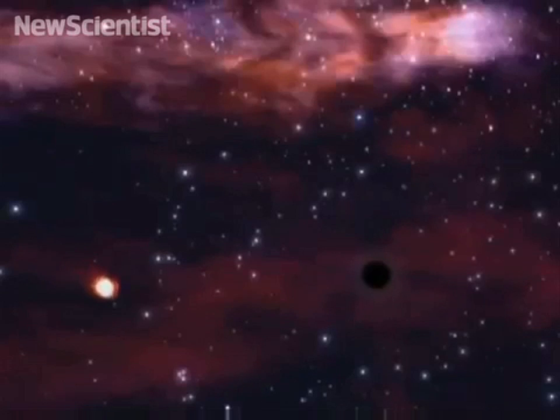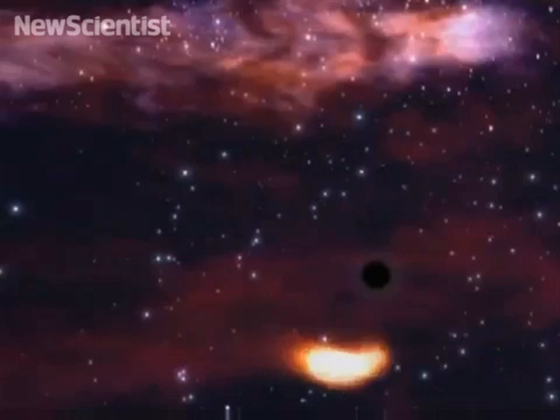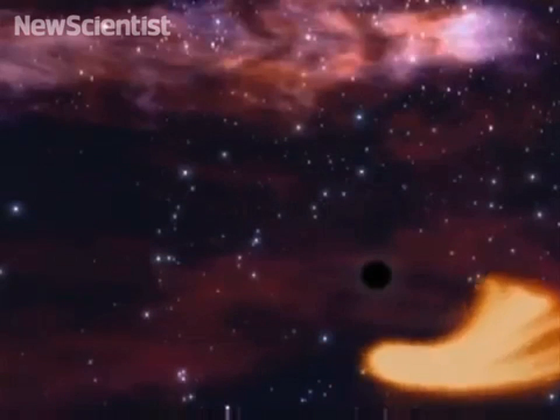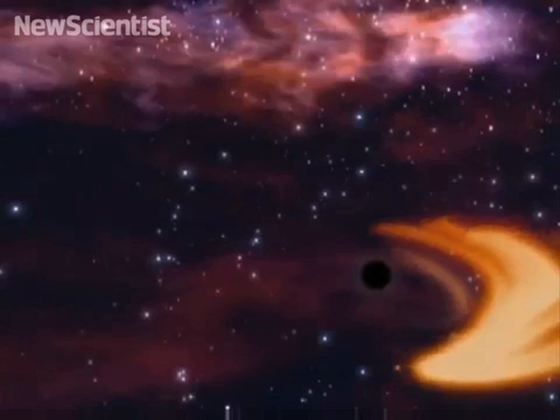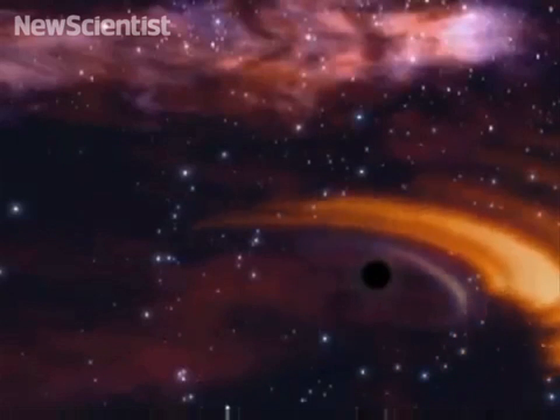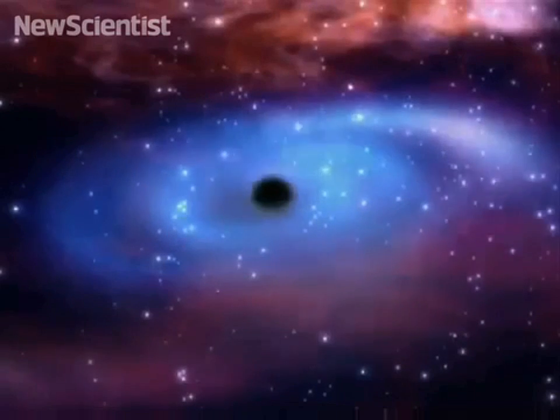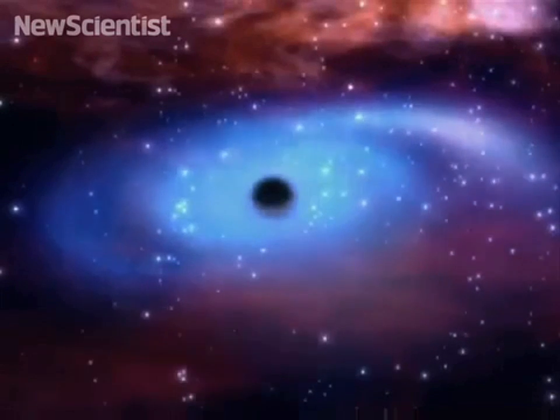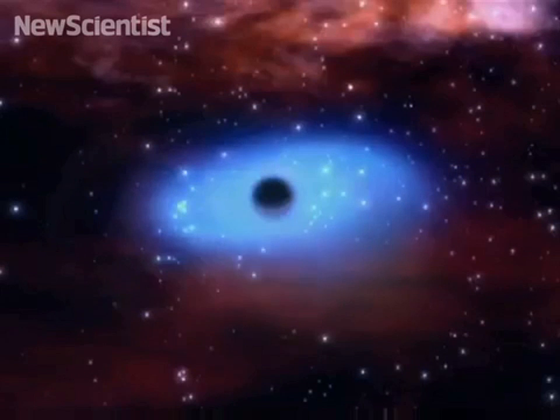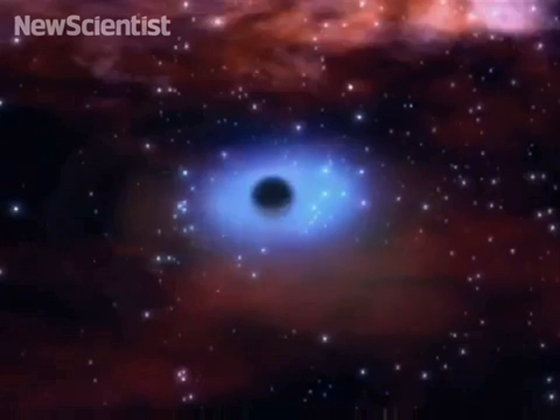In this animation, a star ventures too close to a black hole. Its gravitational pull tears the star apart. Most of the star's gas is ejected and escapes, but some of it spirals inwards to form an accretion disk. This is the celestial equivalent of water spiraling down a plug hole.